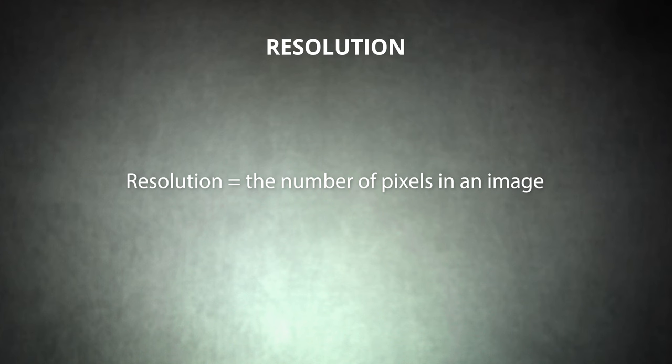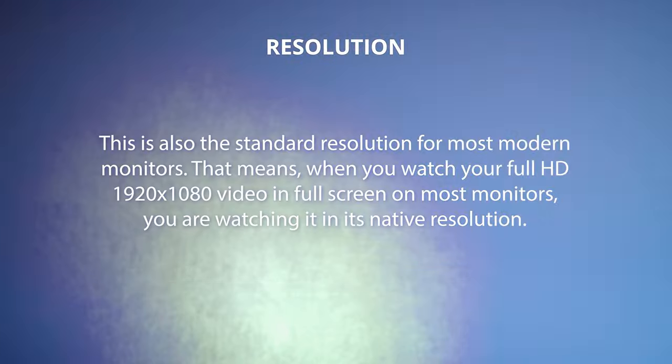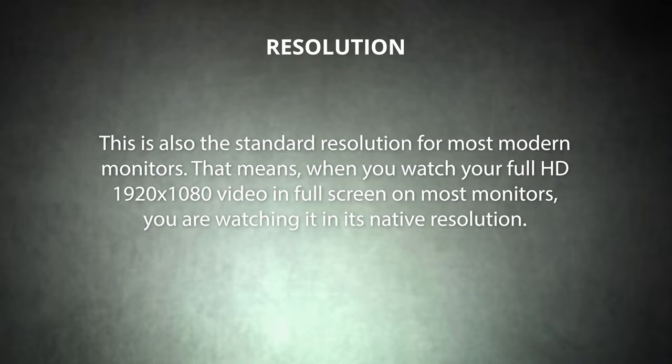We'll start off with the easy one: resolution. This tells us how many pixels are in an image. For instance, each frame of a full HD video is 1920 pixels wide and 1080 pixels tall. This is also the standard resolution for most modern monitors. That means when you watch your full HD 1920x1080 video in full screen on most monitors, you're watching it in its native resolution. Because the video and the monitor share the same number of pixels, this will be the clearest, most accurate experience of your video clip.